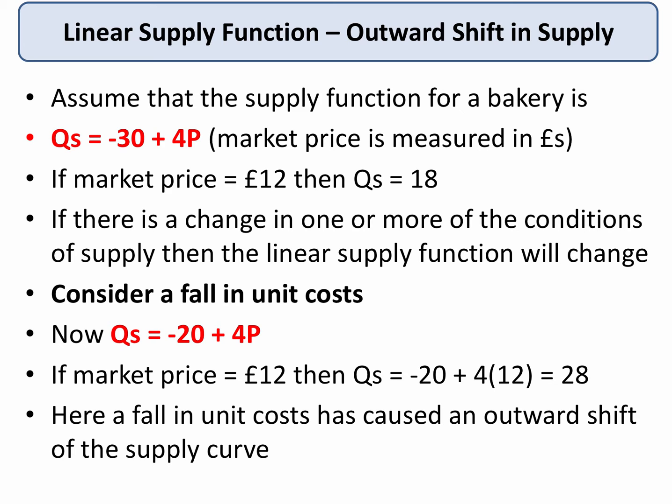Crucially from a revision point of view, can you visualize that? A fall in unit costs causes an outward shift of supply — in other words, more can be supplied by this bakery at every price.